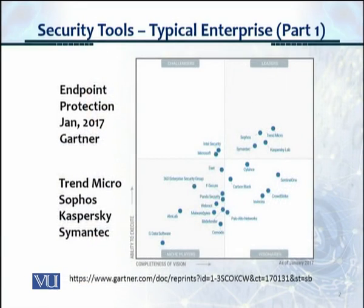In this slide, the first one, this is for endpoint protection — by that we mean antivirus — and this is from January 2017 from Gartner. If you look at the Gartner Magic Quadrant, this is what the graphic actually looks like when you look at the reports. There are four quadrants: the top right quadrant is the leaders quadrant, and the one to the left is the challengers, which is basically the second category.